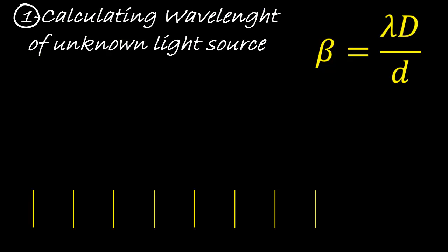And so from the screen, I can calculate what beta is. I will always know what capital D is, and I can calculate what the small d is. That's the screen, the slit distance. And so I can now evaluate what lambda is. So I can evaluate what the unknown wavelength of light is.